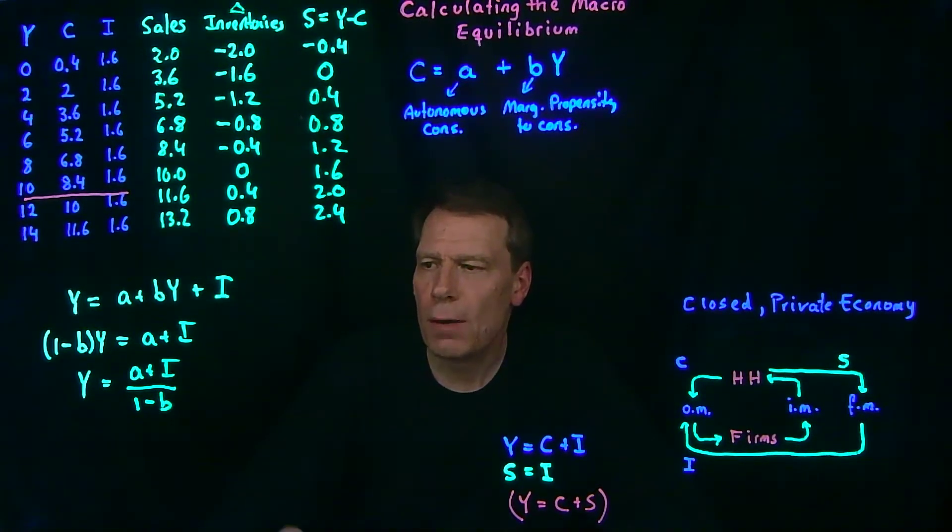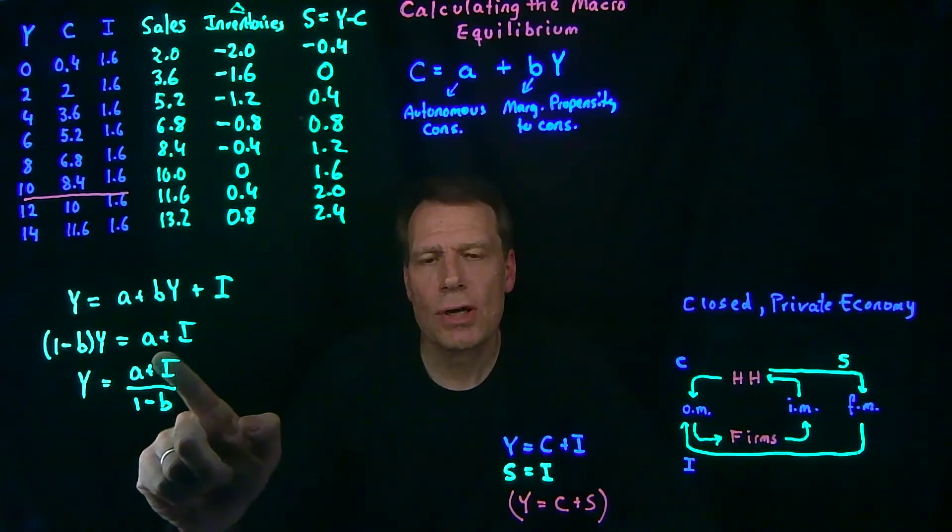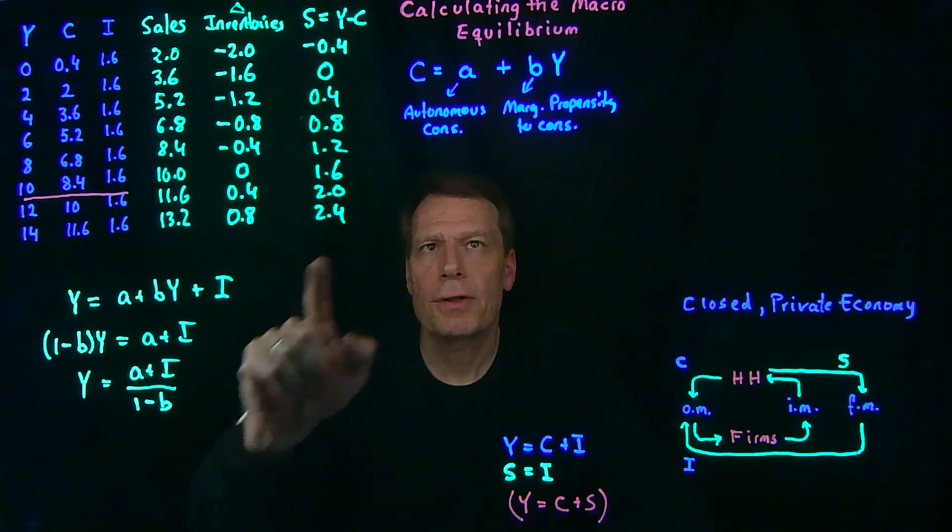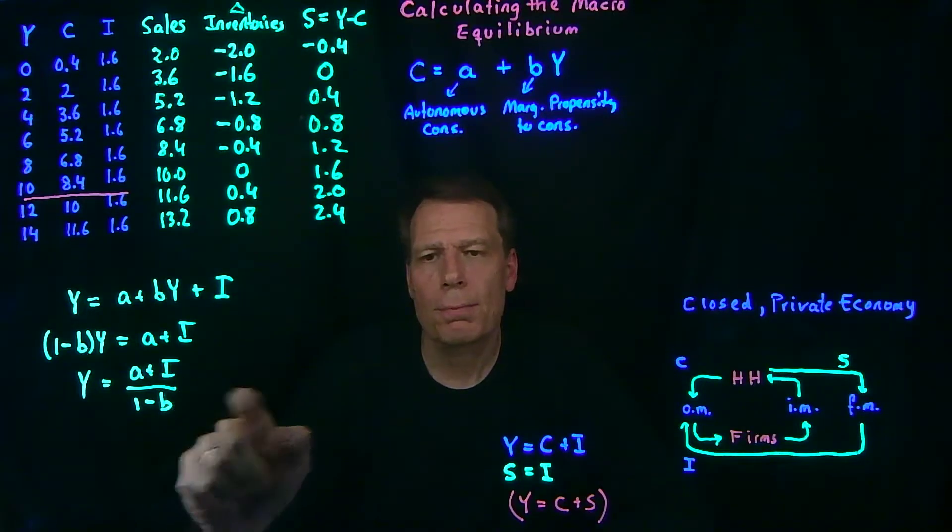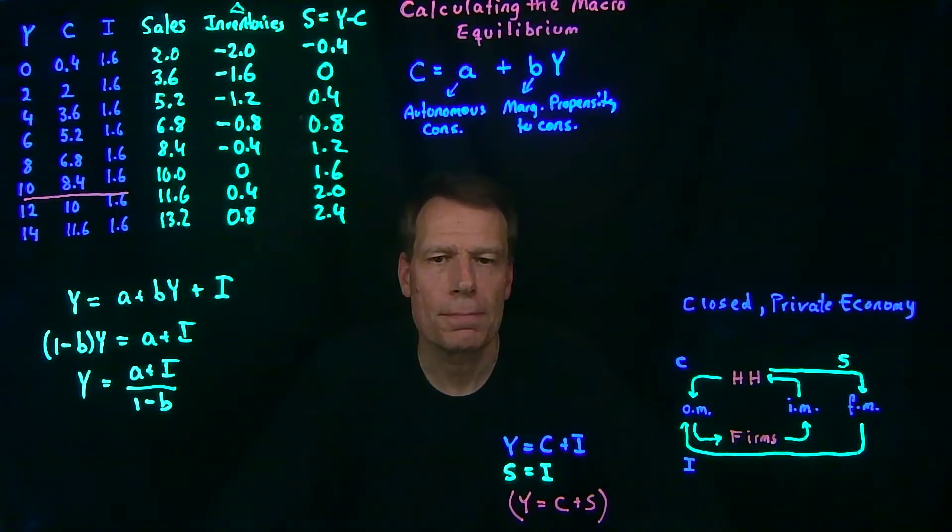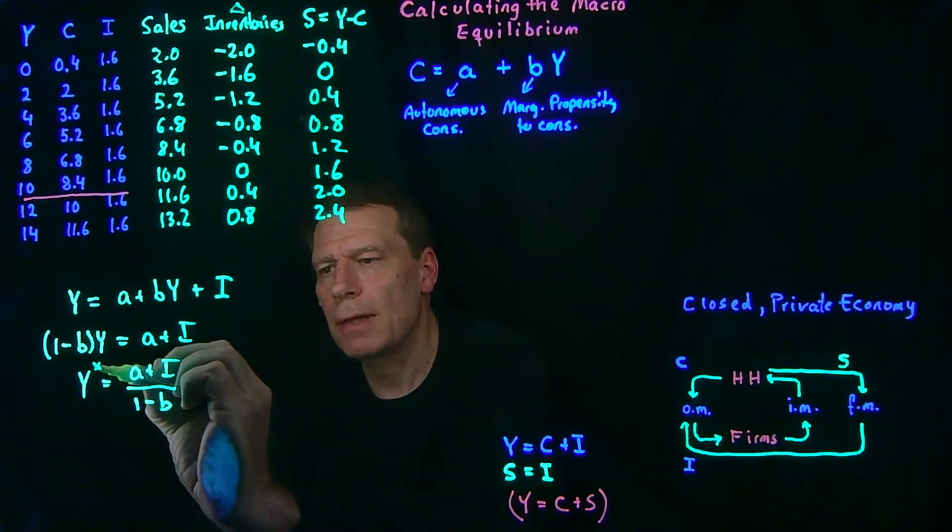So now we have an expression for equilibrium GDP, or equilibrium income, that's just a function of things that are exogenous to the model. Investment is exogenous. The level of autonomous consumption is exogenous in our behavioral equation. And the marginal propensity to consume is also exogenous in that behavioral equation. This will then be our equilibrium level of GDP.